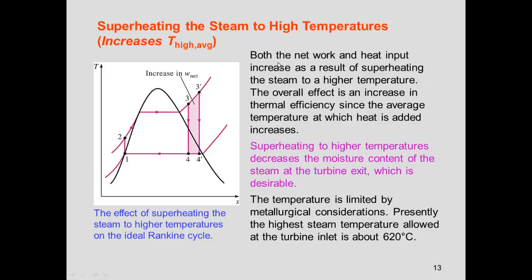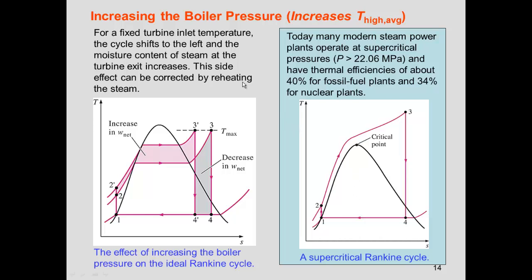Another way to increase efficiency is superheating the vapor to higher temperatures, moving from state 3 to 3 prime and adding the pink-shaded area to the net work. This temperature increase is limited by metallurgical considerations — the maximum currently achievable in turbine and boiler materials is about 620°C. If we fix the maximum temperature and increase the boiler pressure to state 2 prime, we gain the pink area but lose the gray-shaded area, with the net trade-off being positive.